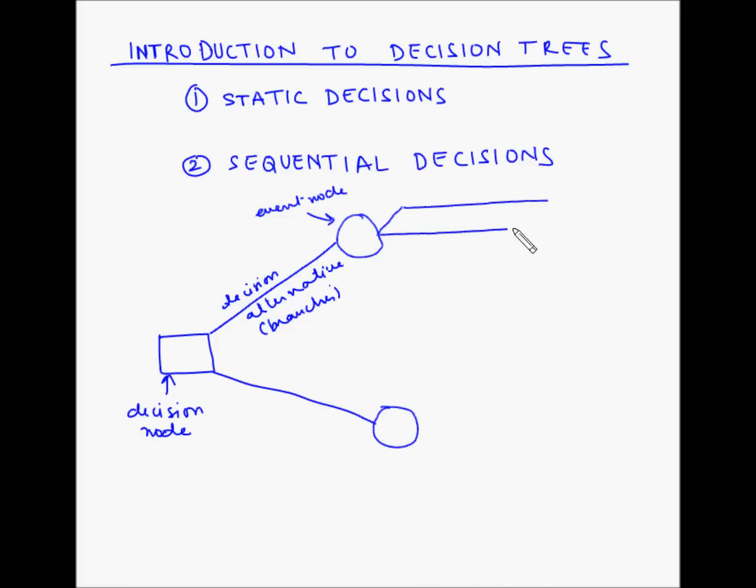So these are the three outcomes emerging from this event node. So these are outcomes.